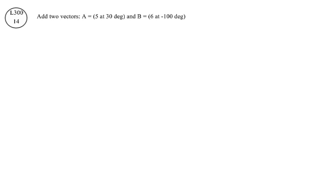Add two vectors. A equals 5 at 30 degrees, and B is 6 at negative 100 degrees.